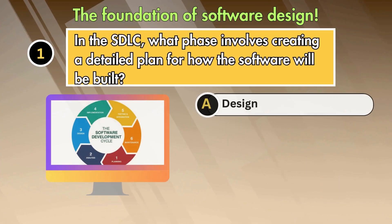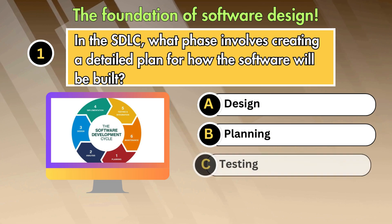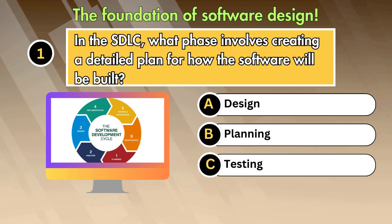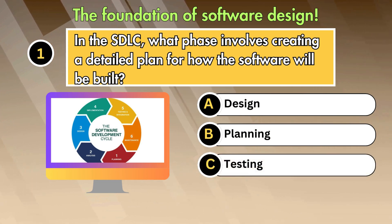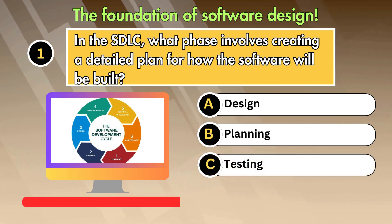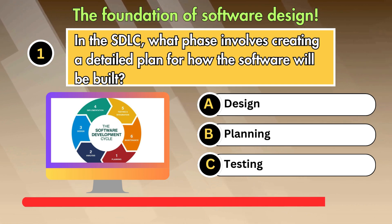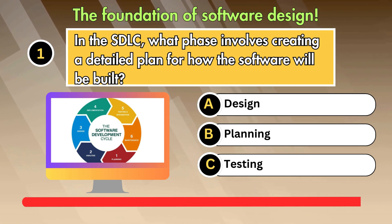In the SDLC, what phase involves creating a detailed plan for how the software will be built? Option 1: Planning. Option 2: Design. Option 3: Testing.